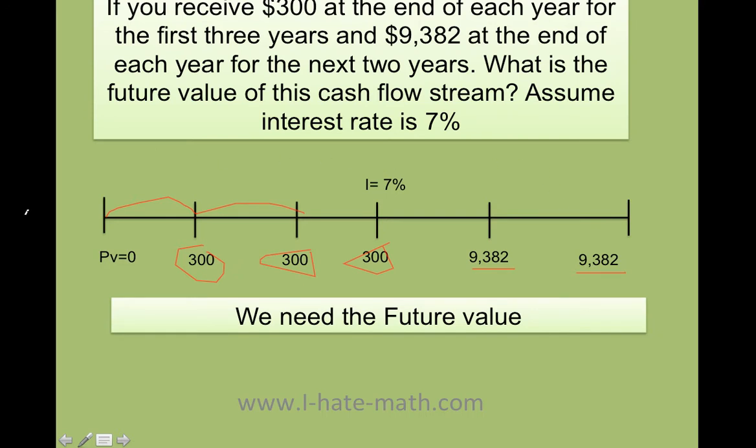How do I find the cash flow or actually how do I find the future value when I have a cash flow stream? Well, look, everyone is different right here. If I have $300 on year four and on year five, I just put in my calculator that my payments are $300 and then just find the future value. But in this case, I cannot do this because look, I have different cash flows. So how do we do it?